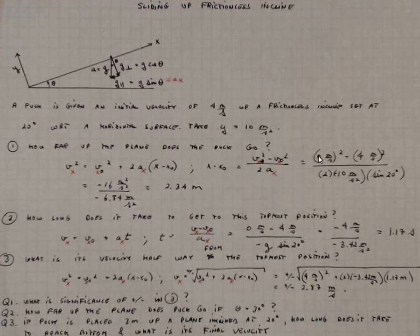v x squared is the velocity at the top, that's 0 meters per second squared minus the velocity at the bottom, 4 meters per second squared over 2 times a sub x. And a sub x is minus 10 meters per second per second times the sine of 20 degrees. That corresponds to the magnitude of this arrow right here.